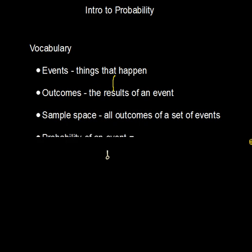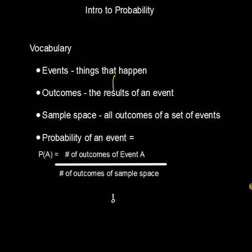Now why do we need to know all this? Because we ultimately want to figure out the probability of an event. The probability of event A, for example, is equal to the number of outcomes of event A divided by the number of outcomes of the sample space.